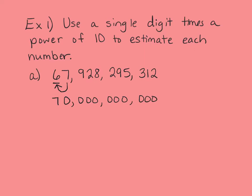So that's a single digit 7 times 10 billion. Instead of writing 10 billion, I know that's the result of multiplying 10 by itself repeatedly. A helpful hint: when dealing with large numbers that are a power of 10, you can just count the zeros. For example, 10 times 10 is 100 — two zeros, so 10 squared. 10 times 10 times 10 is 1,000 — three zeros, 10 to the third. Counting the zeros in 10 billion gives us 10 zeros, so this is 7 times 10 to the tenth power.